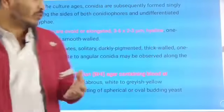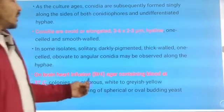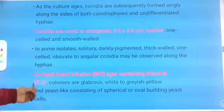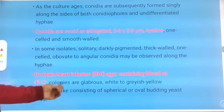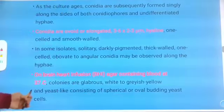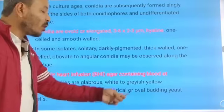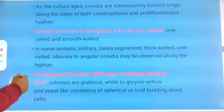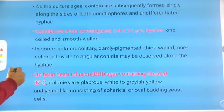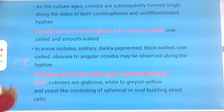In some isolates, solitary, darkly pigmented, thick-walled, single-celled, ovate to angular conidia may be observed along the hyphae. When grown on brain heart infusion (BHI) agar containing blood at 37°C, colonies are glabrous, white to grayish-yellow, and consist of spherical or oval budding yeast.